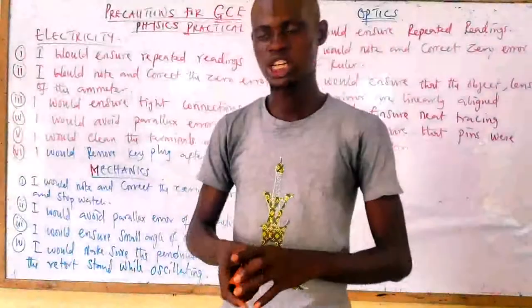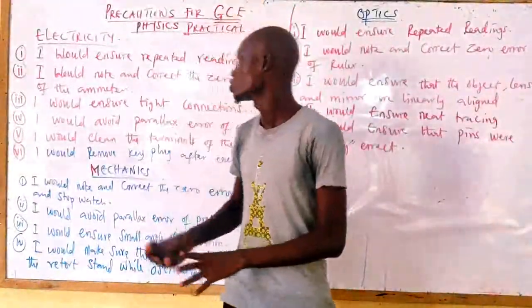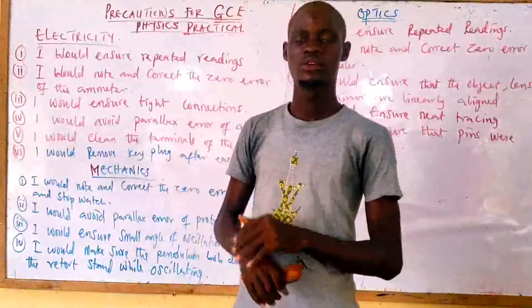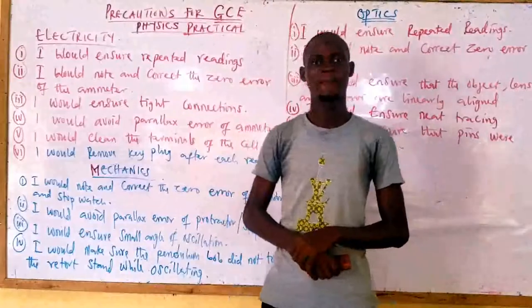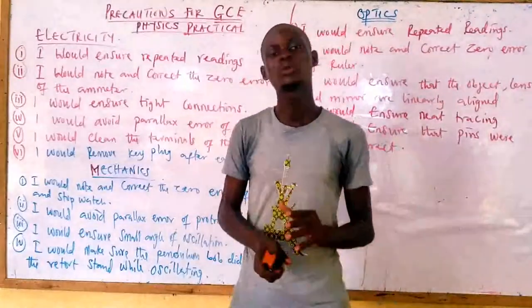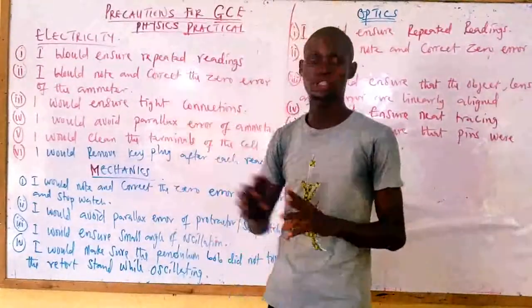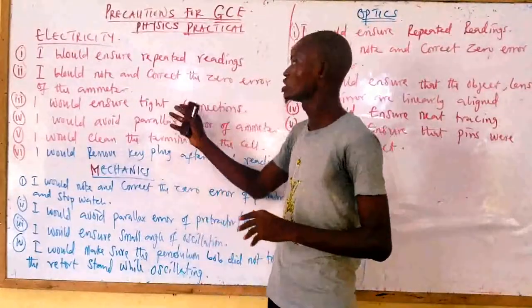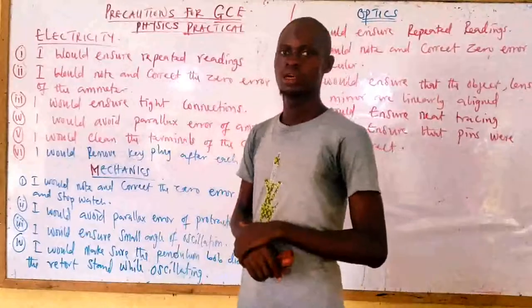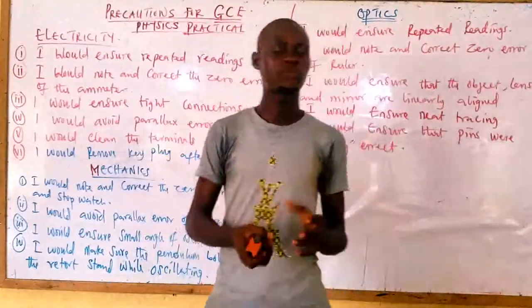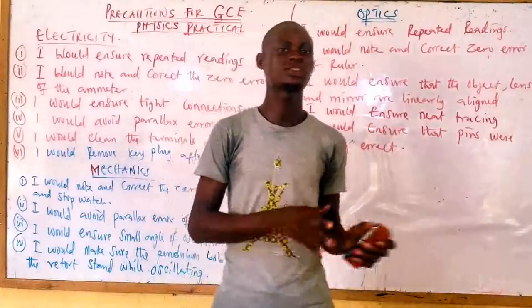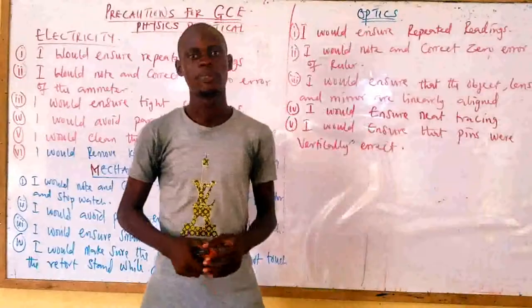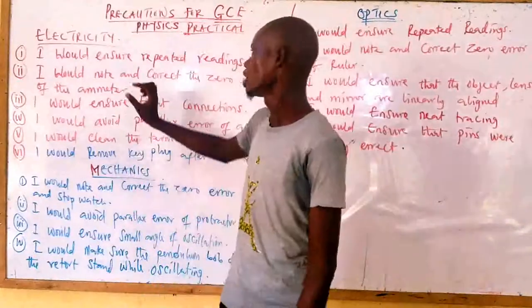Hello guys, welcome back to my channel. Today I want to look at precautions — acceptable precautions for physics practicals in GCE. The way you are going to write down your precautions in GCE should be different from the way you write them when answering the same question elsewhere, because in GCE you are not performing the experiments — the experiment has already been performed. So you only need to give a report of the experiment that was performed.